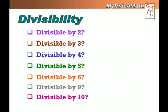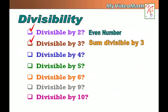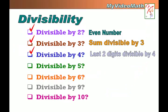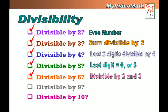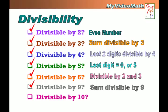Alright, let's summarize. Divisibility rules: divisible by 2 — has to be an even number. By 3 — sum of digits is divisible by 3. By 4 — last two digits divisible by 4. By 5 — ends in 0 or 5. By 6 — has to be divisible by both 2 and 3 at the same time. Divisible by 10 — last digit equal to 0.